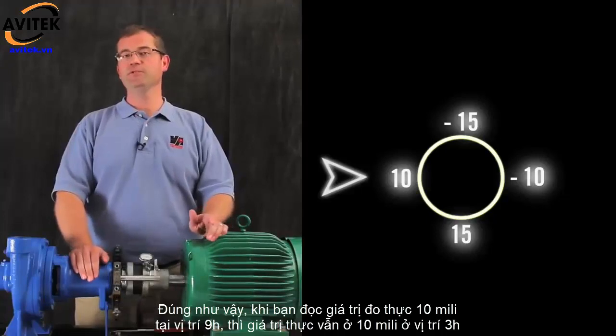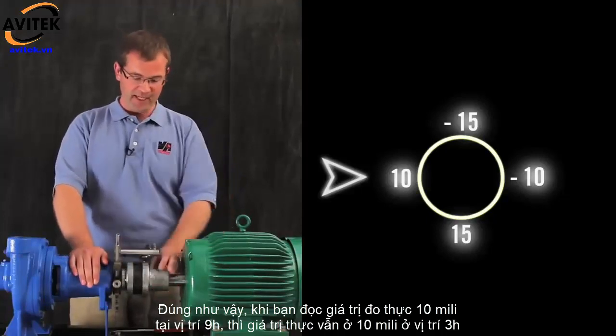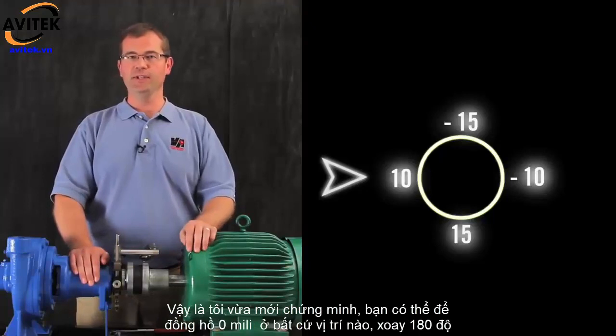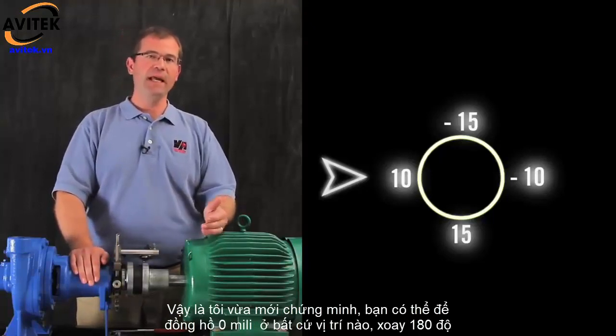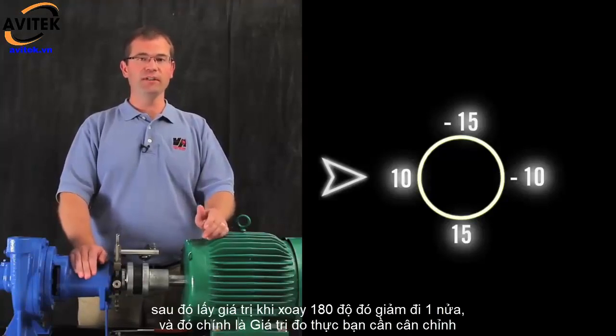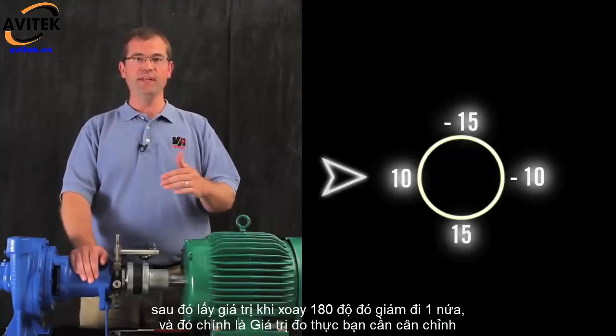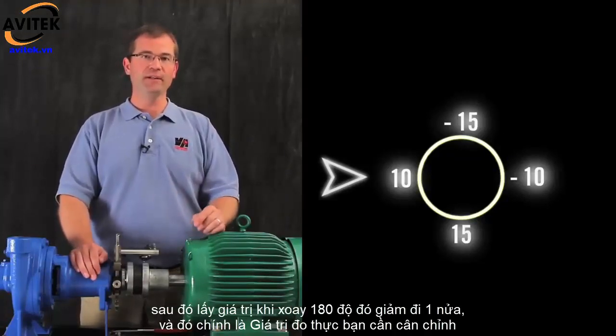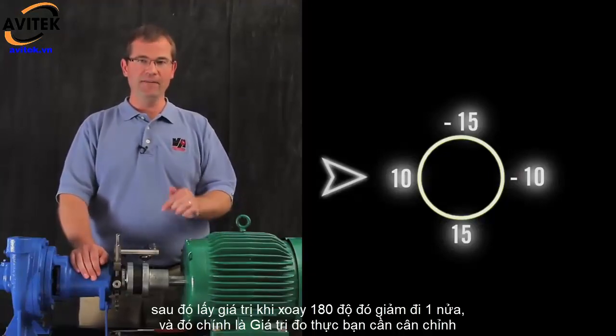So as I've just demonstrated, you can zero the indicators at any position, roll it 180 degrees, half the value, and you will then be reading True Position. Regardless of the orientation of the indicators, you'll be reading True Position in that direction.